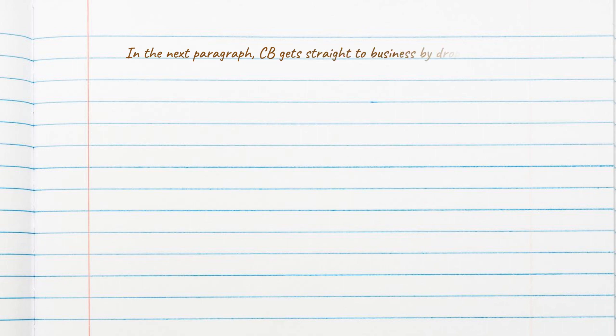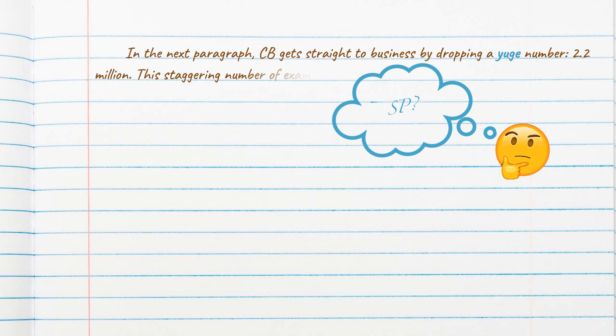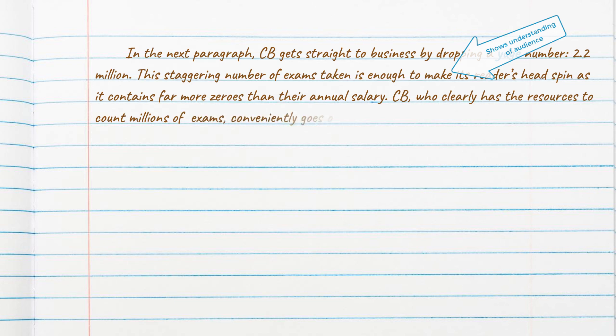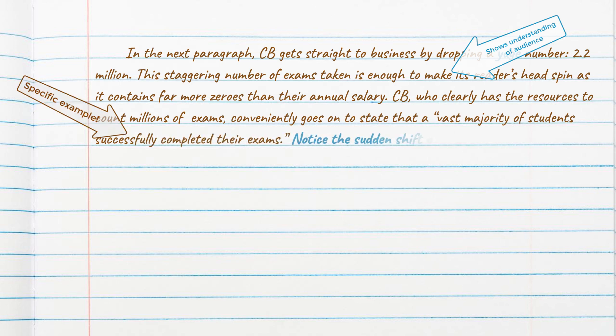In the next paragraph, CB gets straight to business by dropping a huge number, 2.2 million. This staggering number of exams taken is enough to make its readers head spin as it contains far more zeros than their annual salary. CB, who clearly has the resources to count millions of exams, conveniently goes on to state that a vast majority of students successfully completed their exams.